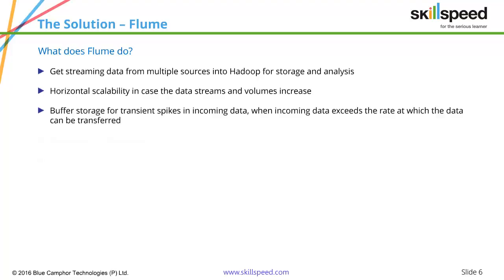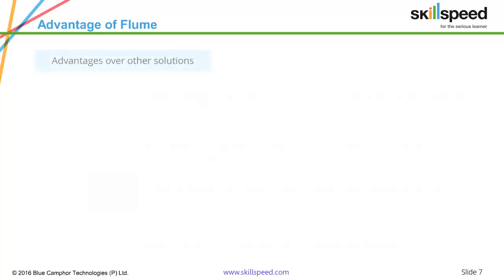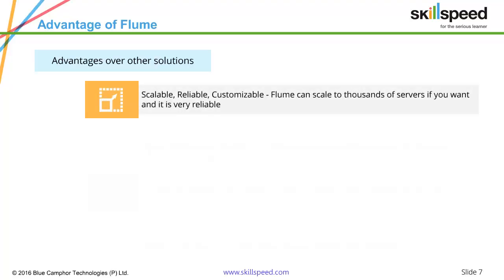Flume also provides buffer storage for transient spikes in incoming data — when incoming data exceeds the rate at which data can be transferred. For example, at the peak hour of the day the number of log files may tremendously increase. When designing a system to transport this into Hadoop, you don't want to miss any single log entry. Thankfully, Flume has a very effective channel system which can accommodate real-time spikes and transfer them effectively.